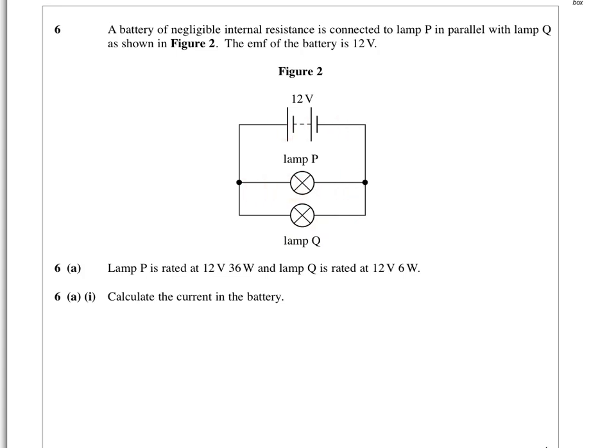The question says lamp P is rated at 12 volts, 36 watts, and lamp Q is 12 volts, 6 watts. So what's the difference between them? You should realize that if they've both got 12 volts across them but different power, that's because they draw different amounts of current.